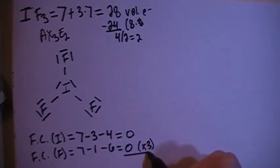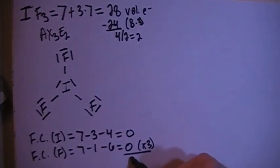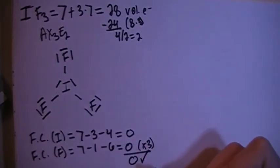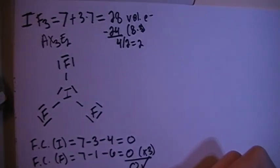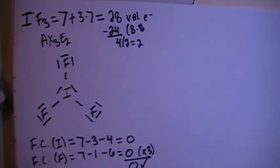And multiply that by 3 because there are 3 of them, you add all these up and it gives you an overall formal charge of 0, which is what we need because this is not a charged particle.